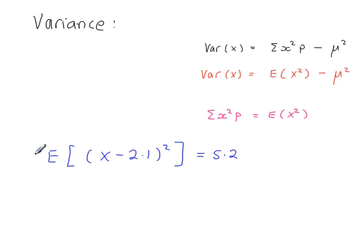This is yet another way of giving the variance. The 2.1 here represents the mean. The 5.2 is the variance. So if you see any statement like this, and typically this comes up in exam papers, the value here is the mean, and the value here is the variance.